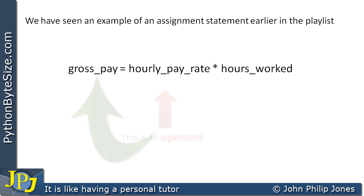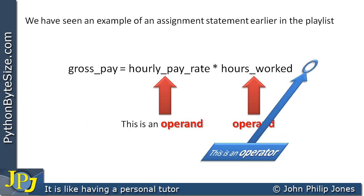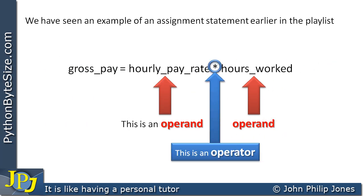To be formal about this, hourly pay rate and hours worked are each referred to as an operand. The symbol in the middle — the multiplication sign — is referred to as an operator, and indeed it is an arithmetic operator. In this case it will multiply together the two operands and store the result in gross pay.